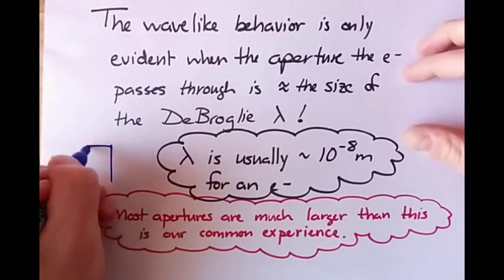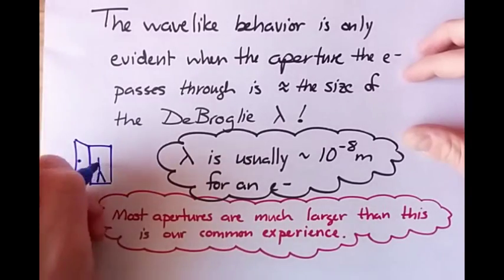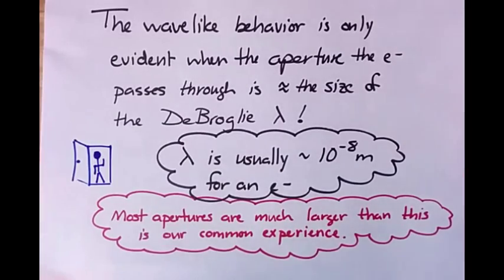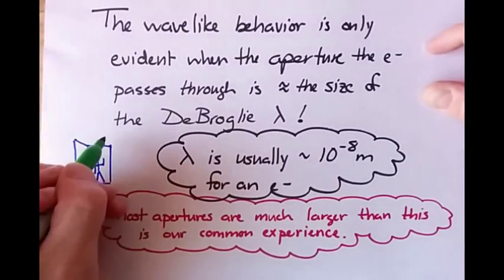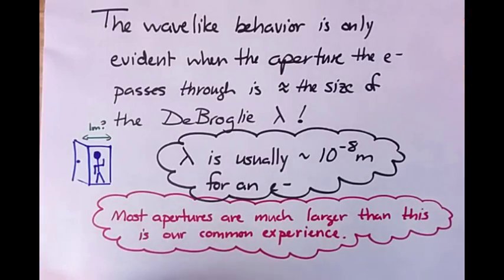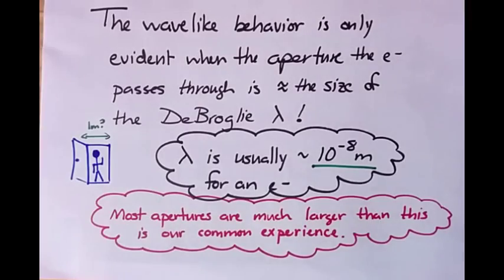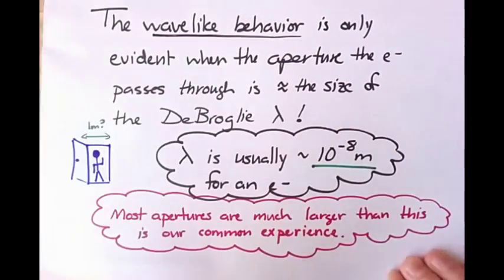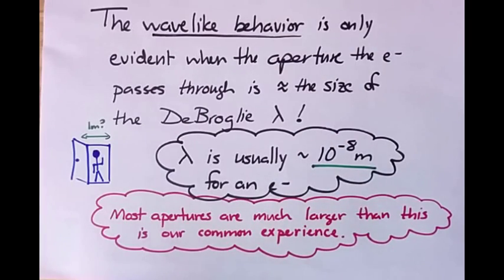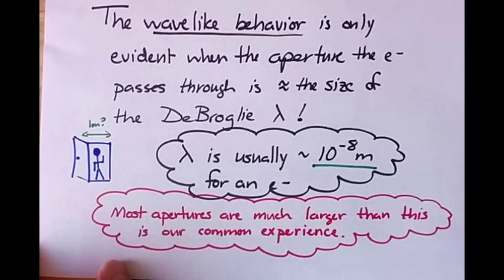If I walk through a door, I mean, that's probably the most common aperture that I see on a day-to-day basis is a door. And the doors that I pass through are usually, I don't know, a meter wide, maybe less. But they're definitely not as small as 10 to the minus 8 meters. So this wave-like behavior of electrons and of all matter is normally not noticed in our everyday world of macroscopic objects.